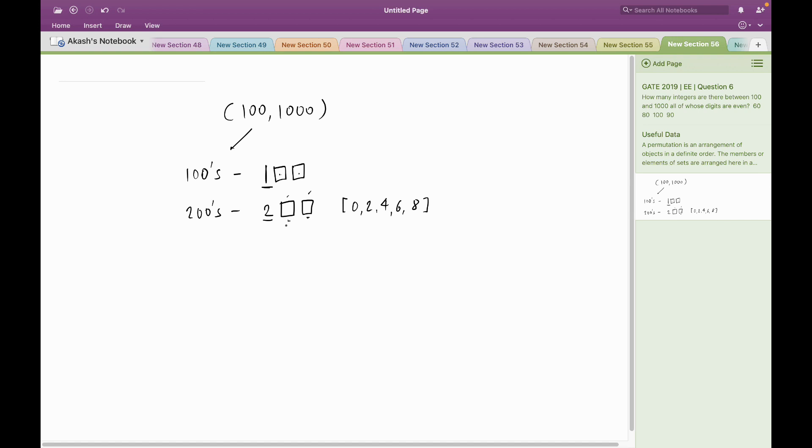The tens place can be filled with 5 different digits. Similarly, the units place can be filled with 5 different digits. So altogether I have 5 × 5 = 25 different numbers whose all digits are even in the 200 series.